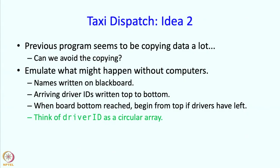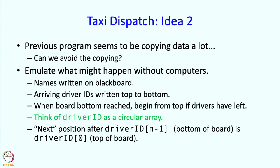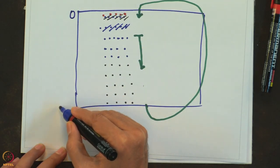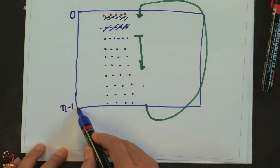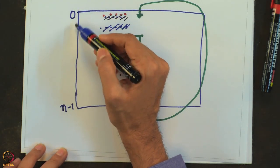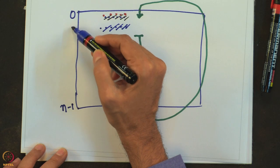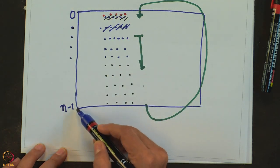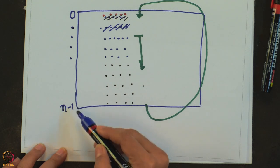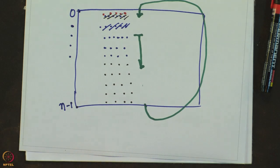So we are going to think of this driver ID as a circular array. What that means is that the next position after driver ID n-1, so this is index 0, this is index n-1. So after this position, the next position is this. After this position, the next position is this and so on. But after this, normally you might be tempted to say that there is no next position. But no, in this case, we are going to say that the next position is this. So it is kind of a circular array.